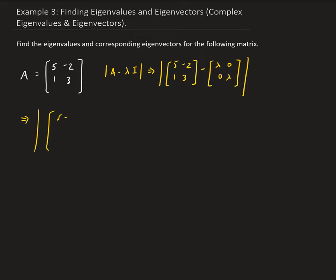That's going to give us five minus lambda, negative two, one, and three minus lambda. So the determinant of this is going to be five minus lambda times three minus lambda, minus a negative two. And remember, we want to find the eigenvalues that give us the determinant equal to zero.